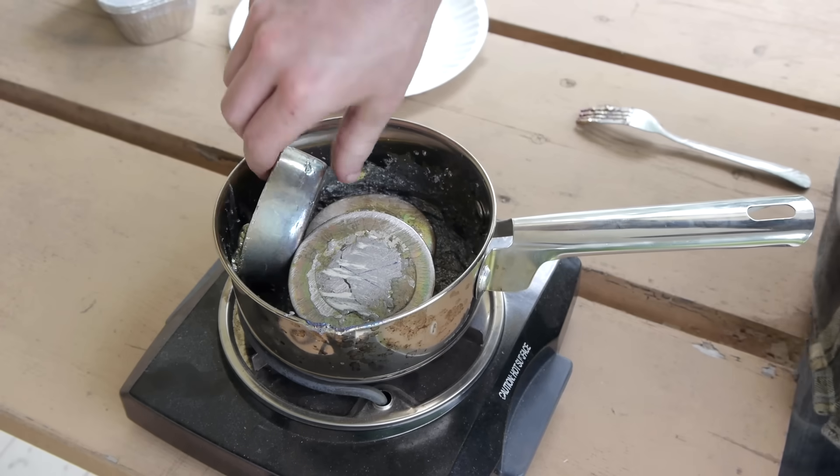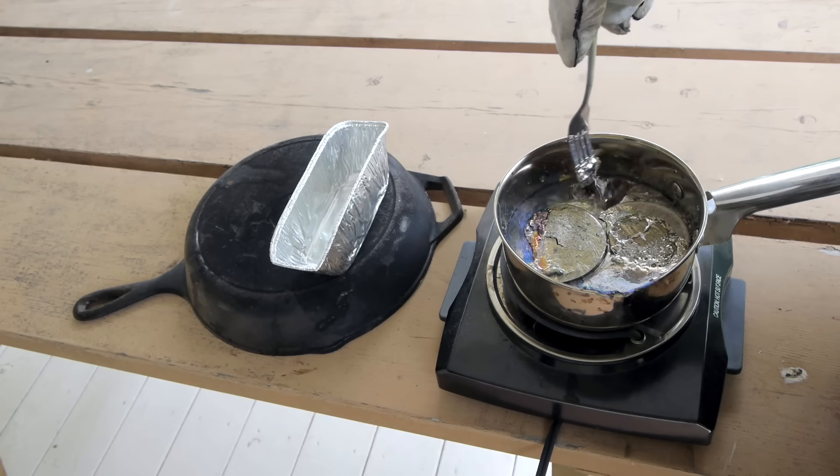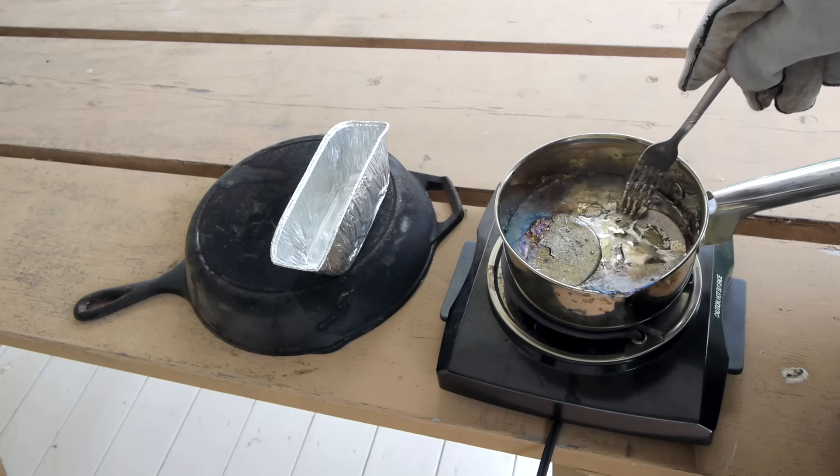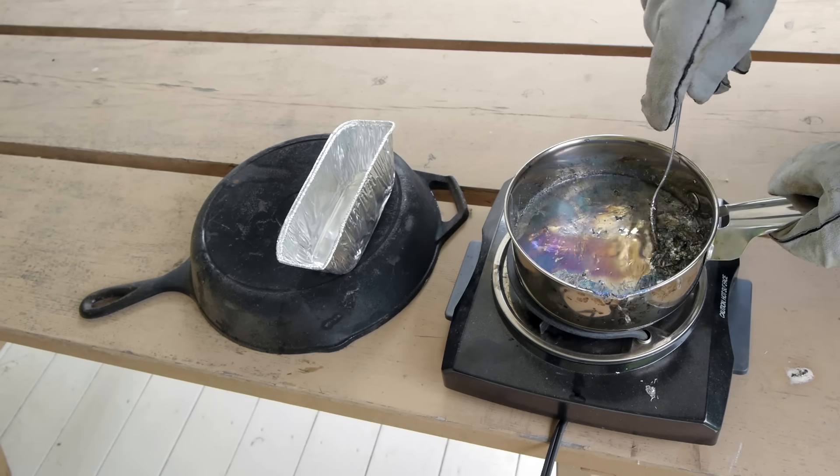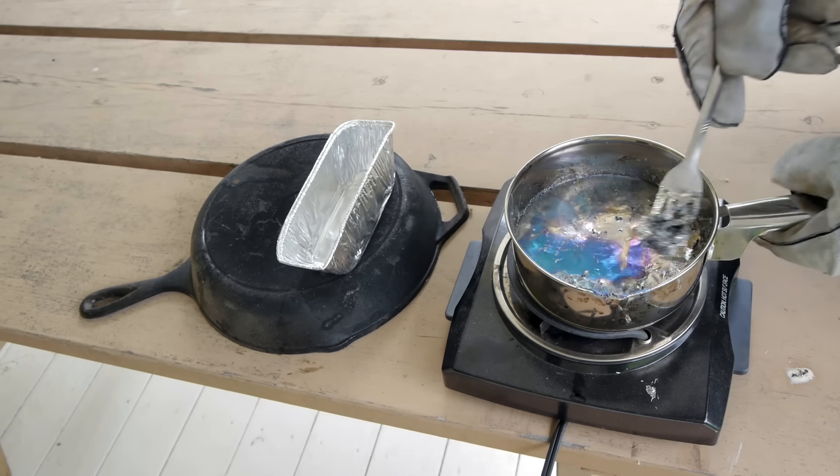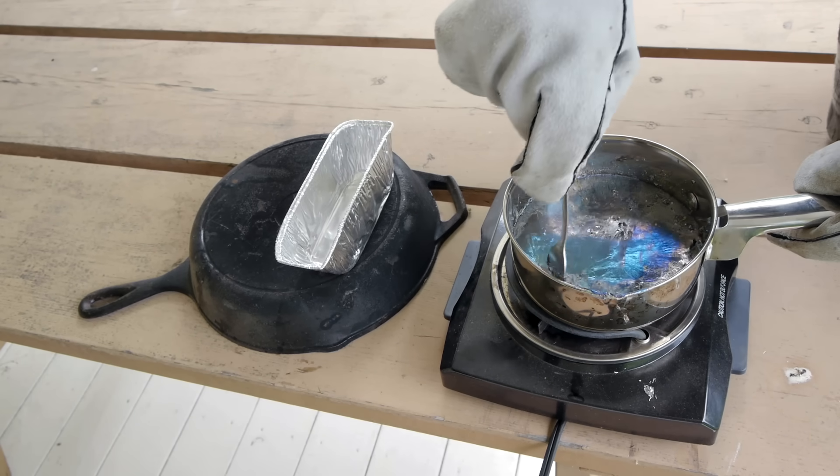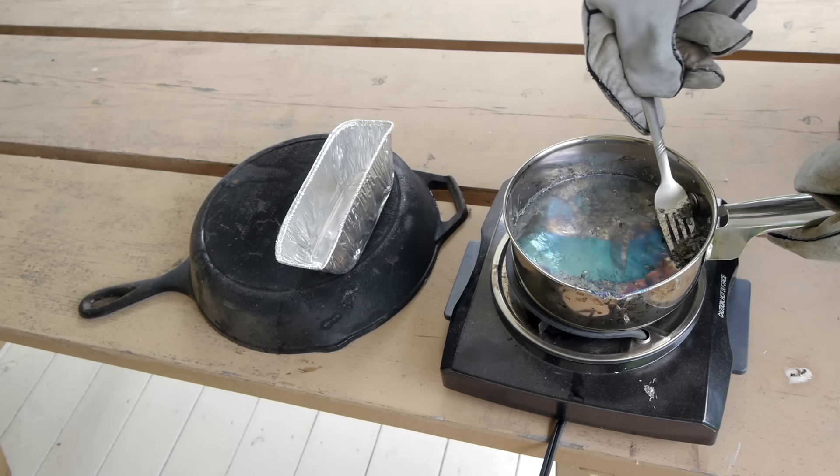I started by re-melting my ingots, this time outside since they still have some epoxy on them and I wasn't sure how bad the vapors would be. It didn't end up being a big deal, as the epoxy just floated to the surface once the bismuth had melted, and I just skimmed it off with the rest of the slag.